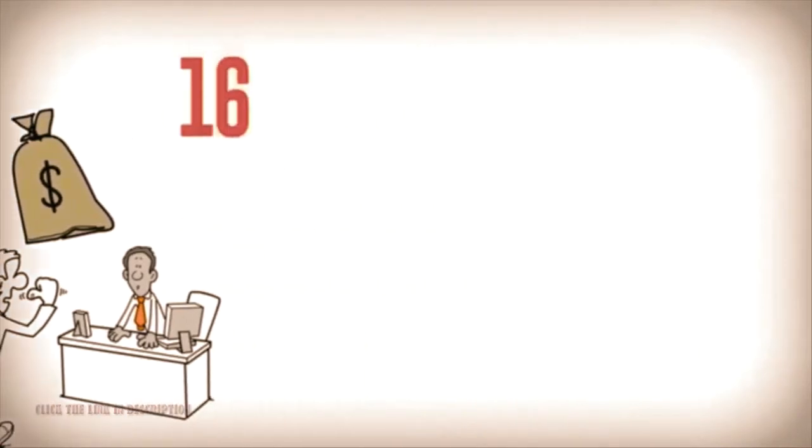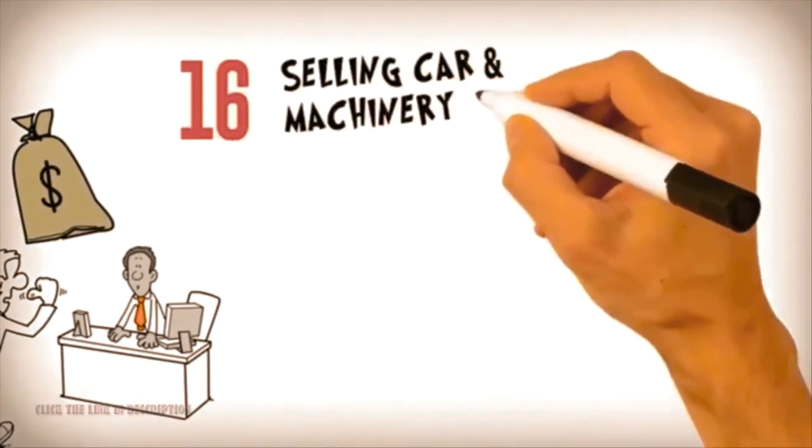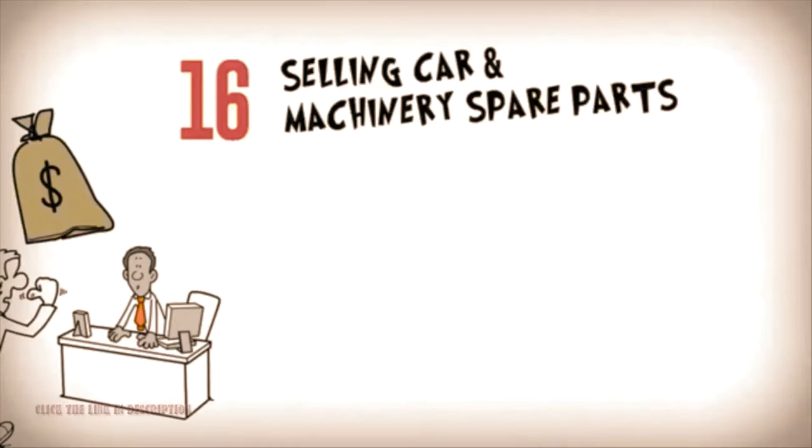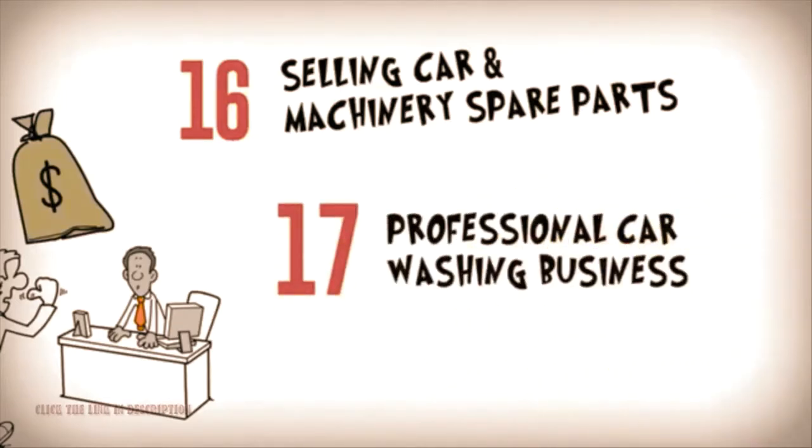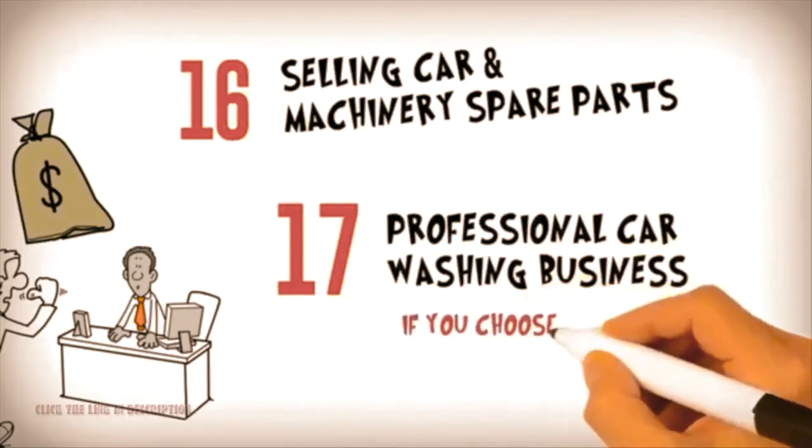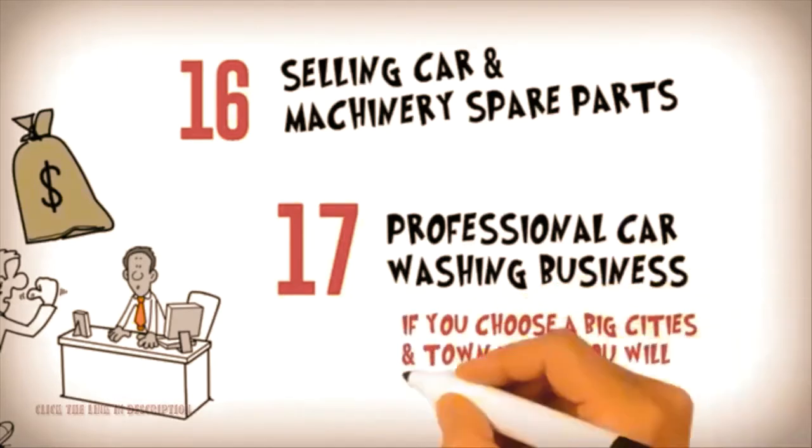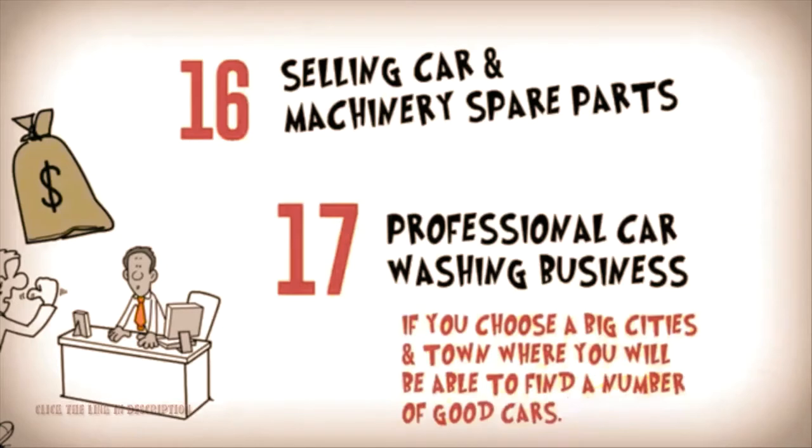Sixteen: selling car and machinery spare parts. Seventeen: professional car washing business. This can be a good business if you choose big cities and towns where you will be able to find a number of good cars.